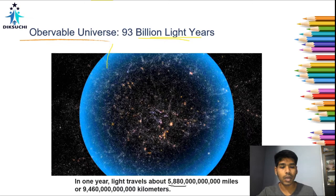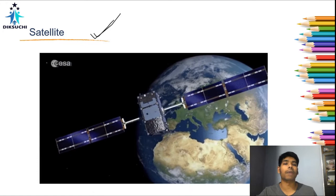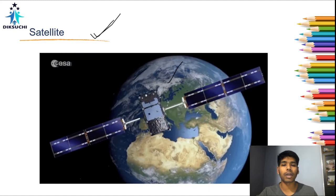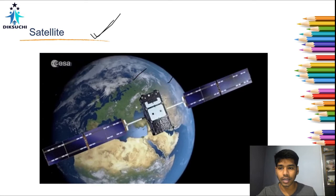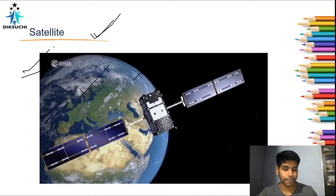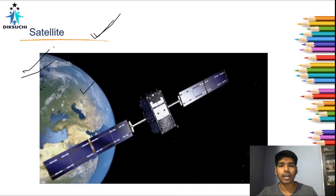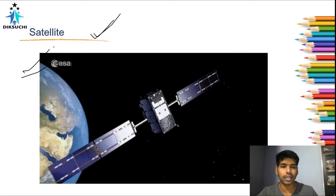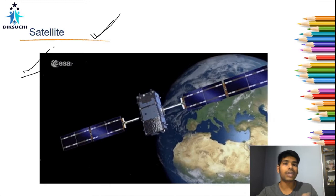When talking about space technology, we mainly refer to artificial satellites — man-made bodies which we send into space to orbit the Earth. A satellite has basic elements: a power source (solar or nuclear), a payload (which can be cameras or particle detectors), and an antenna to receive information and a transponder to send information back. Satellites are designed based on their purpose.